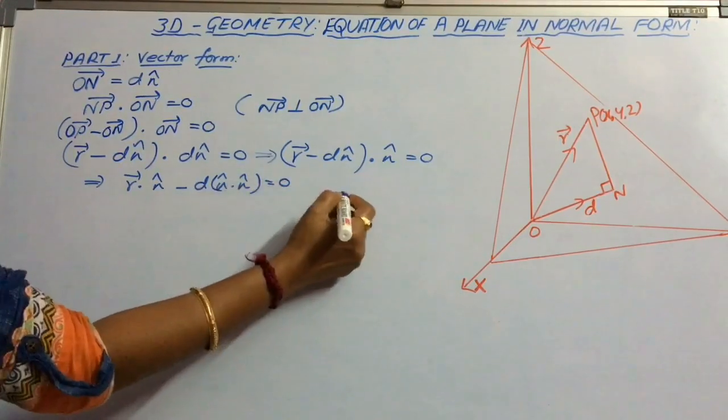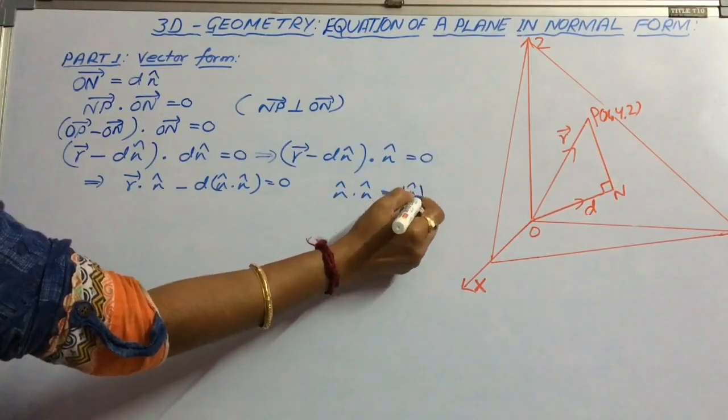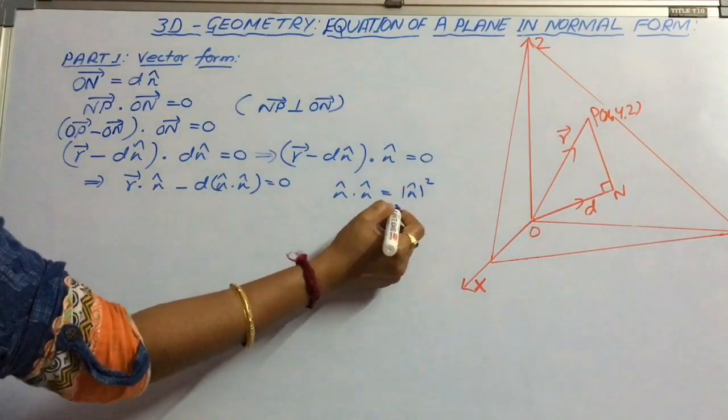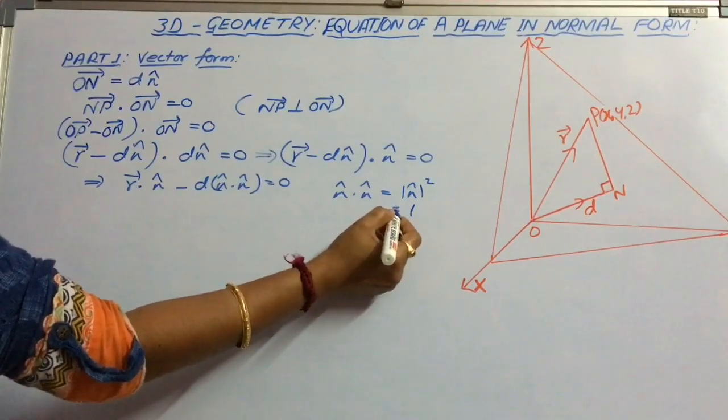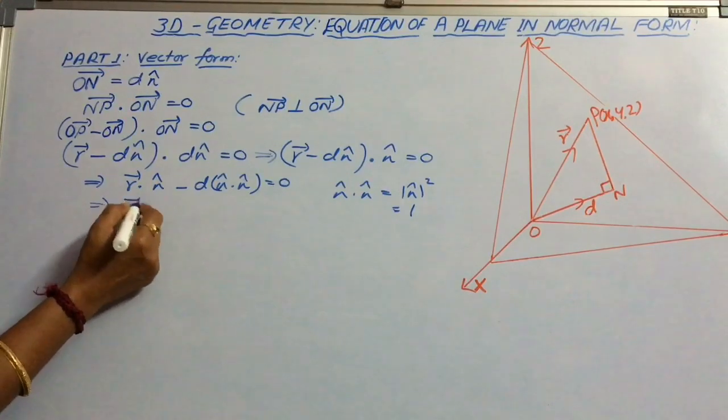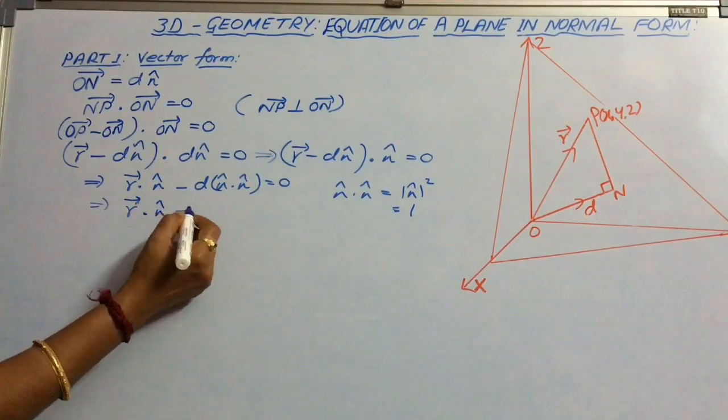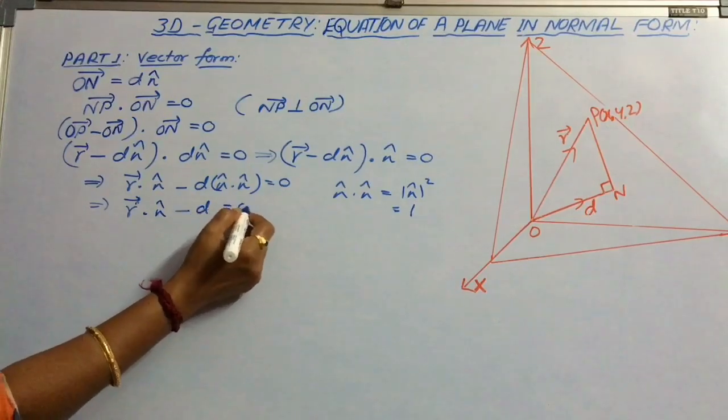But we know that n cap dot n cap is mod n cap squared, that is equal to 1 because n cap is the unit vector. So this implies vector r dot n cap minus D equal to 0.